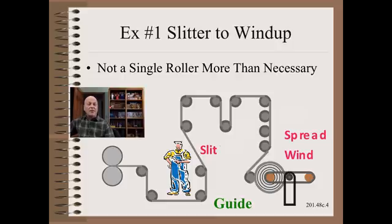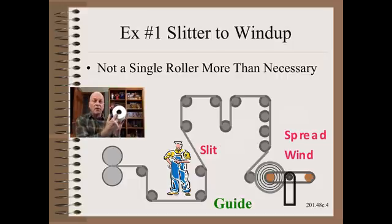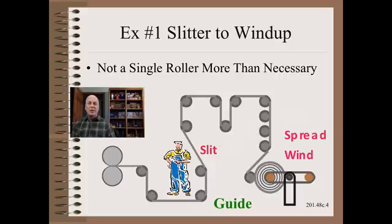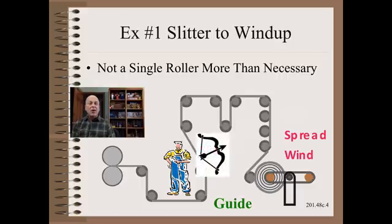Slitters and winders are some of the very most common components. What is essential for good roll edge quality is to not have even one more roller than necessary between the slitter and the wind-up. If the slitter is some distance away, you will have poor roll edges always and forever. That is because the slitter is the last place where you had control of the edge. After that it is like an arrow released from a bow — the longer the distance, the more the scatter.